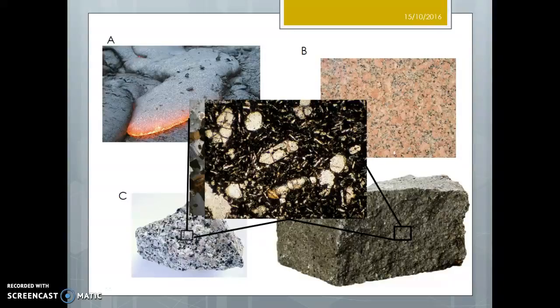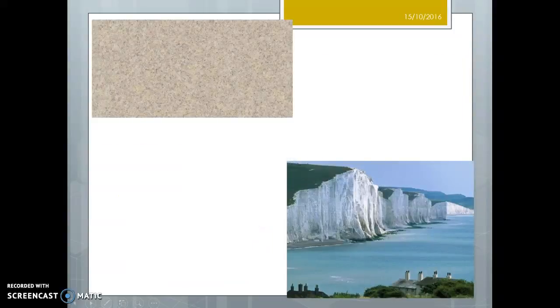So generally, igneous rocks are hard and resistant to erosion. The basalt is extrusive - it has erupted and so it cools over a much shorter time period. We don't get the interlocking crystals, so it's not likely to be as hard as these granites.